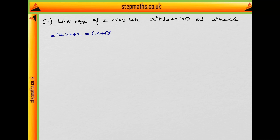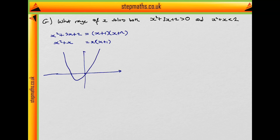This factors as x plus 1 times x plus 2. And similarly, x squared plus x equals x times x plus 1. So we see both graphs have a root at x equals minus 1. Our other graph has a root at x equals 0, so this is our graph of x squared plus x.